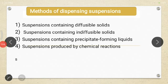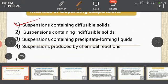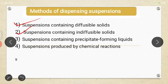The next point is the method of dispensing suspension. Suspensions are divided into four types according to the method of dispensing: first, suspensions containing diffusible solids; second, suspensions containing indiffusible solids; third, suspensions containing precipitate-forming liquids; and last, suspensions produced by chemical reaction.